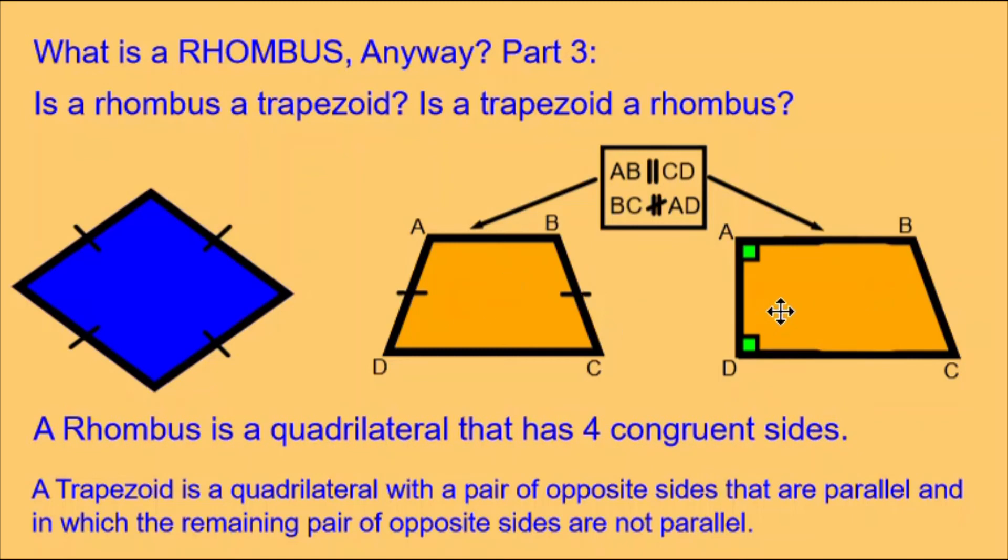Are these trapezoids rhombuses? The answer is no. The definition of a rhombus is a quadrilateral that has four congruent sides. Neither of these trapezoids have four congruent sides, and in fact the characteristics that make them trapezoids make it impossible for them to have four congruent sides.